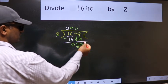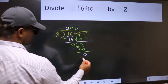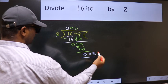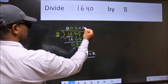No more numbers to bring it down. So we stop here. This is our remainder and this is our quotient.